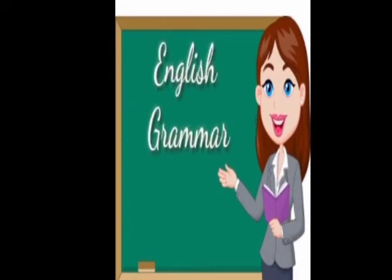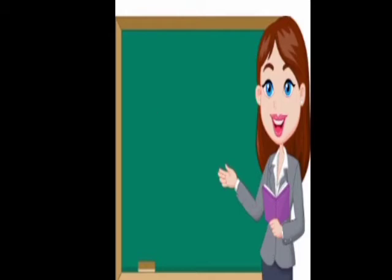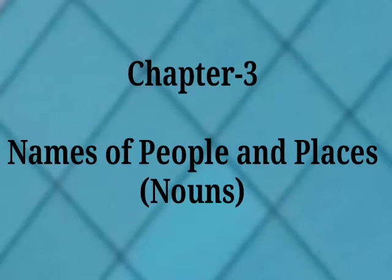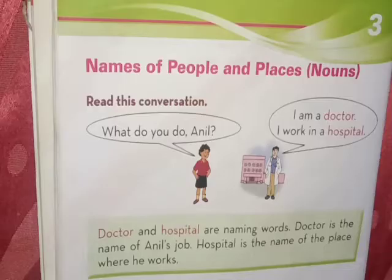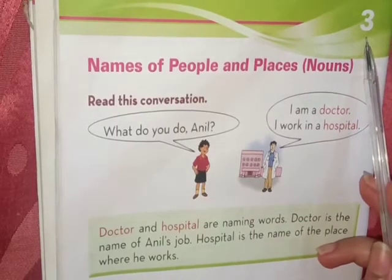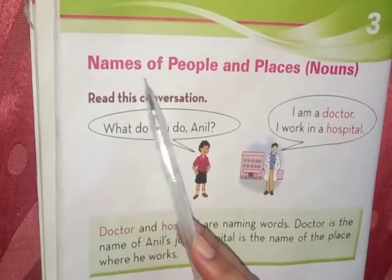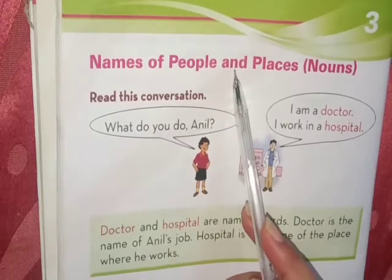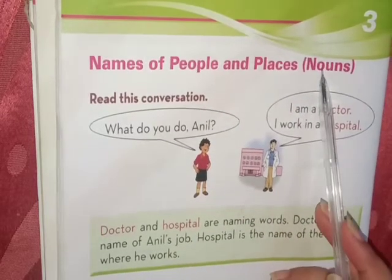Today we will start a very new topic from your book Enjoying Grammar. That is Chapter 3, Names of People and Places. It is also a part of the chapter on Nouns.